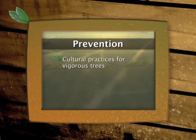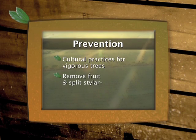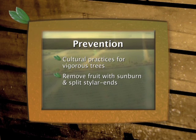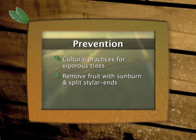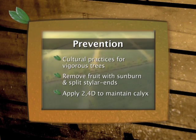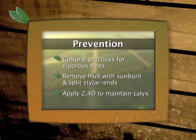Control measures include production practices that promote tree vigour and the removal of fruit that show signs of sunburn and splitting at the stylar end. The use of 2,4-D in the packhouse is essential to delay the abscission of the calyx.